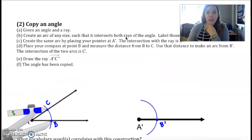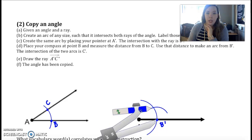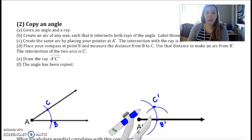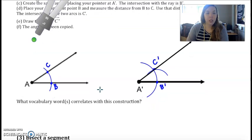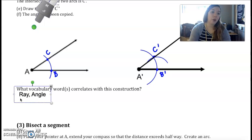Place your compass at point B and measure the distance from B to C, we did that. Use that distance to make an arc from B prime. From B prime here, again you don't want to change your distance at all. I'm going to draw an arc and where they intersect right here, that's my C prime. My last step would be to draw a ray with a straightedge to connect A prime and C prime. Vocabulary words that correlate here: we used ray, we used angle, we used intersect which is where they cross.